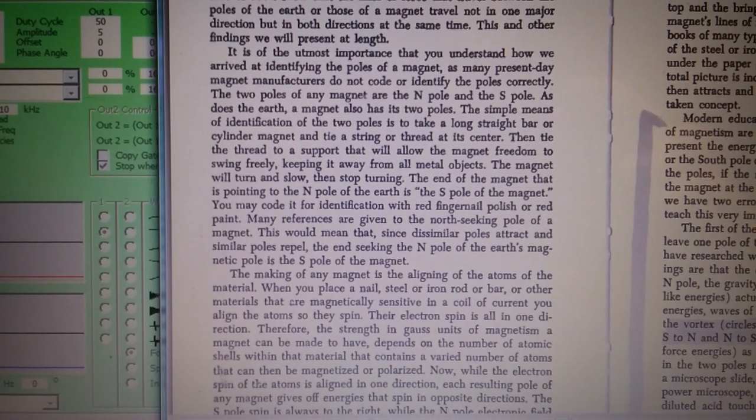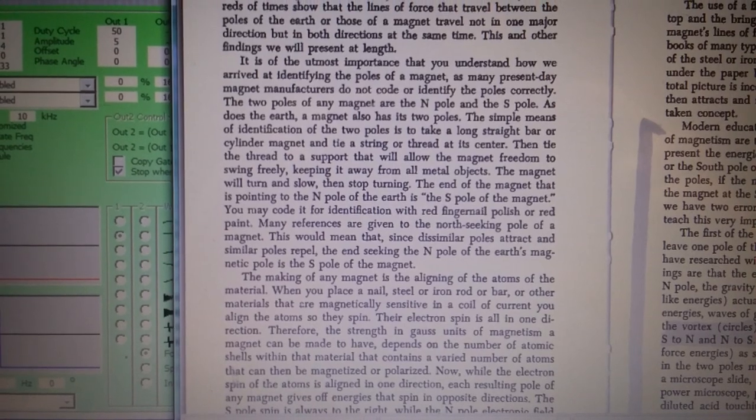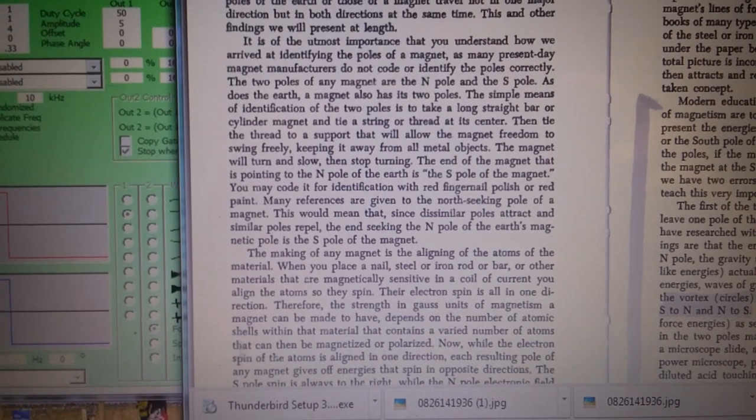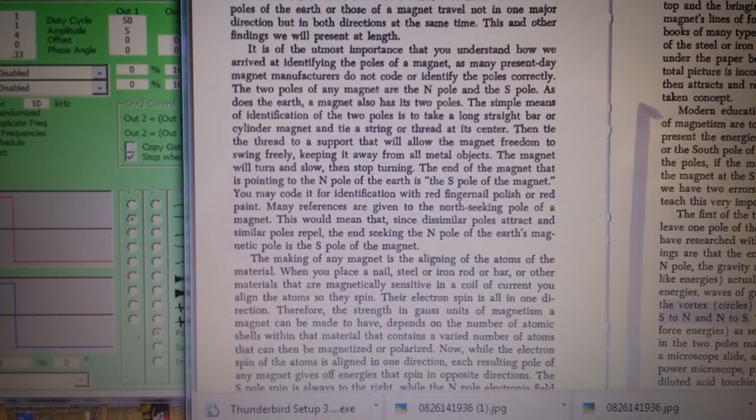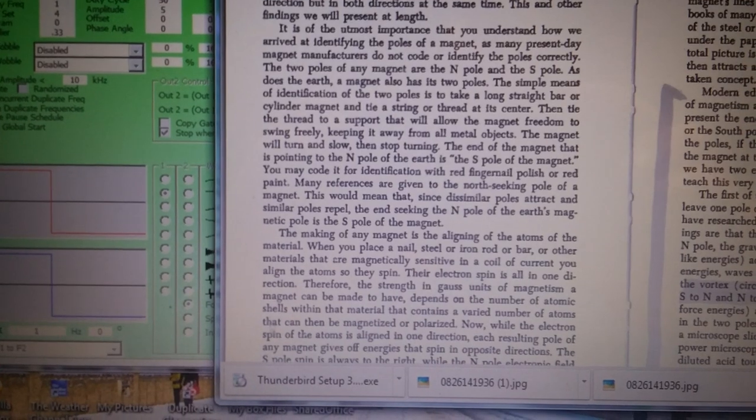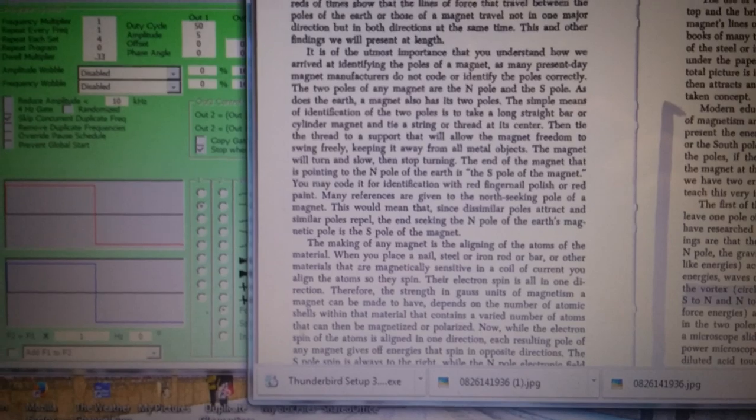The simple identification of the two poles is taking a long bar or cylinder magnet, tie string at the center and then tie the thread to something so that it will hang. The end of the magnet that is pointing to the North Pole of the earth is the South Pole of the magnet.